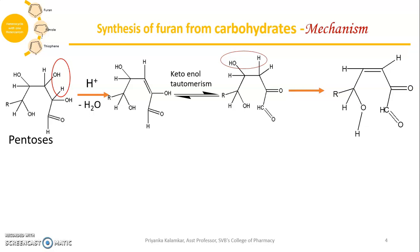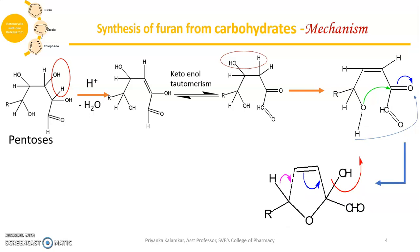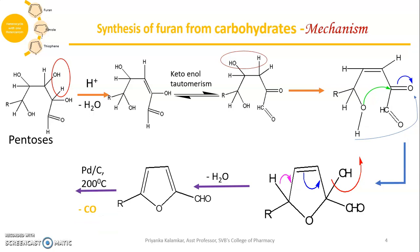Then there is cyclization and formation of a new C–O bond, which results in the formation of the furfural molecule. This lone pair will attack on the carbonyl carbon, which has a partial positive charge. Then the pi bond present between the C=O bond completely shifts onto the oxygen, and this hydrogen is taken up by the oxygen, resulting in the formation of the furfural molecule. Again there is a shift of bond and loss of a water molecule, giving you furfural. Furfural on decarboxylation gives you the furan molecule.